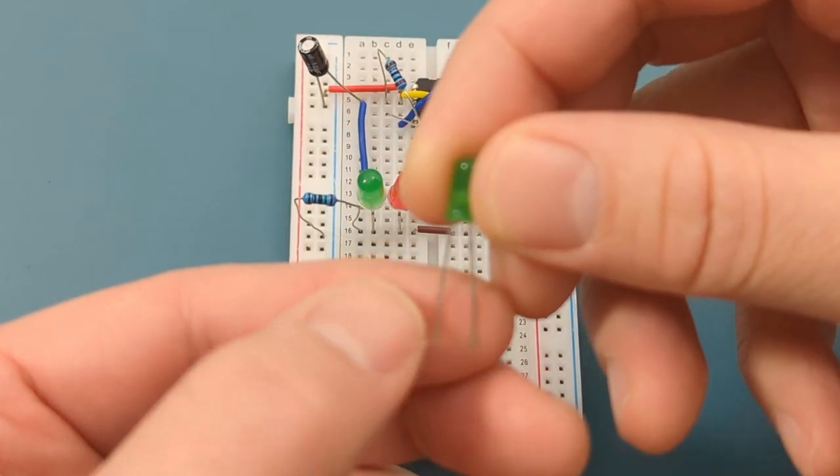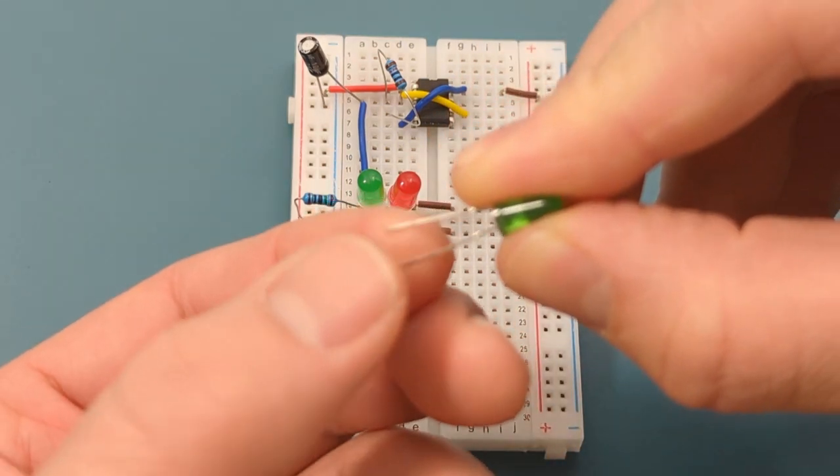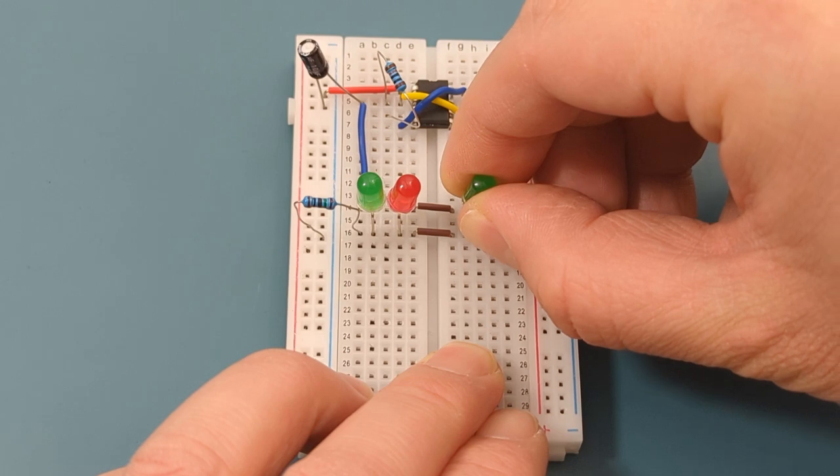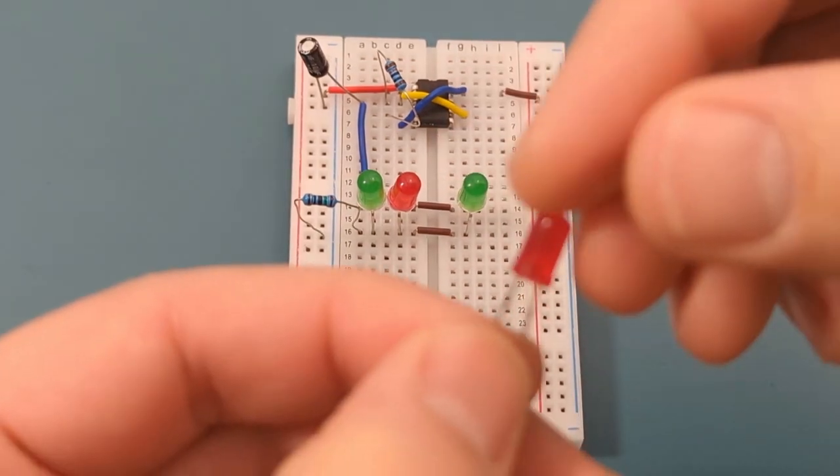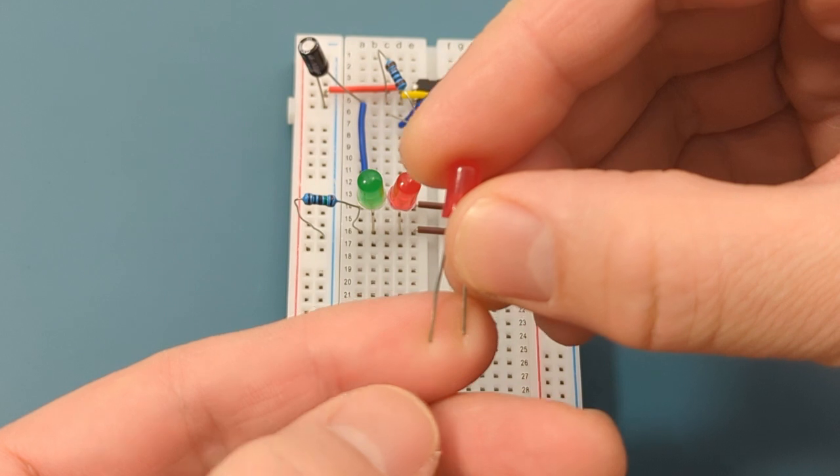Insert the second green LED in row 14 and row 16. The longer leg is in row 16. Insert the second red LED in row 14 and row 16. The longer leg is in row 14.